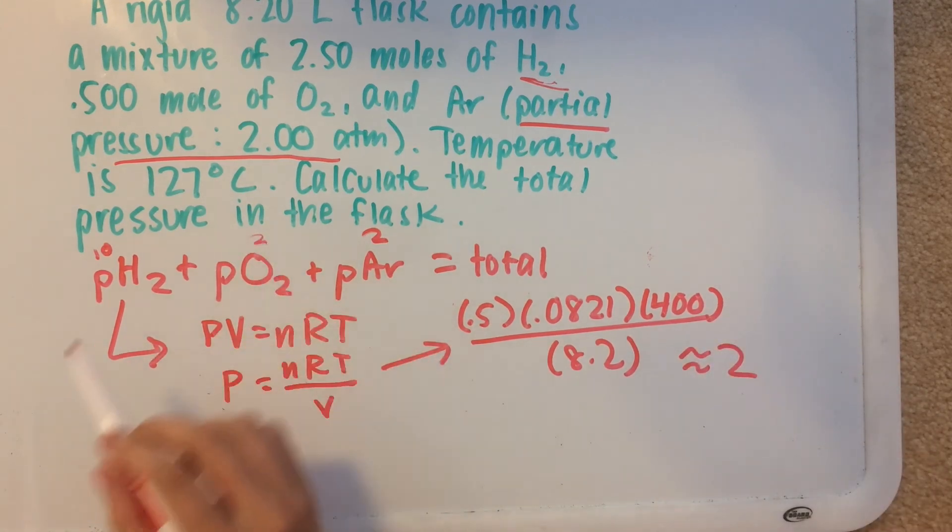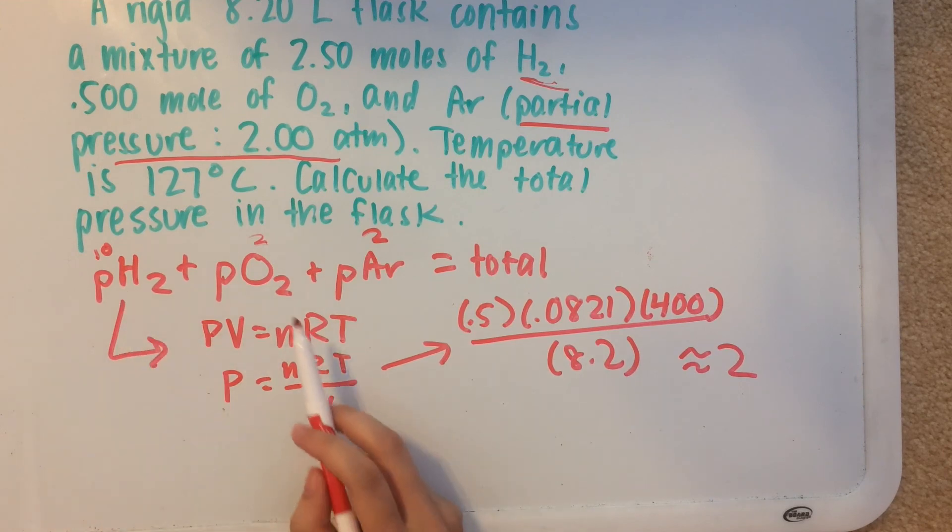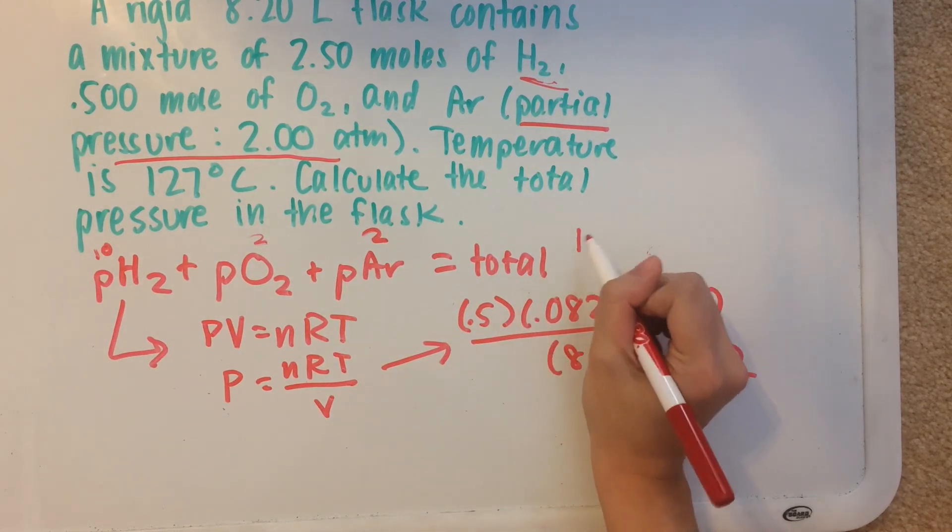And then we have the partial pressure of H2 is 10 atmospheres. Partial pressure of oxygen is 2 atmospheres. And partial pressure of argon is 2 atmospheres, giving us a total of 14 atmospheres.